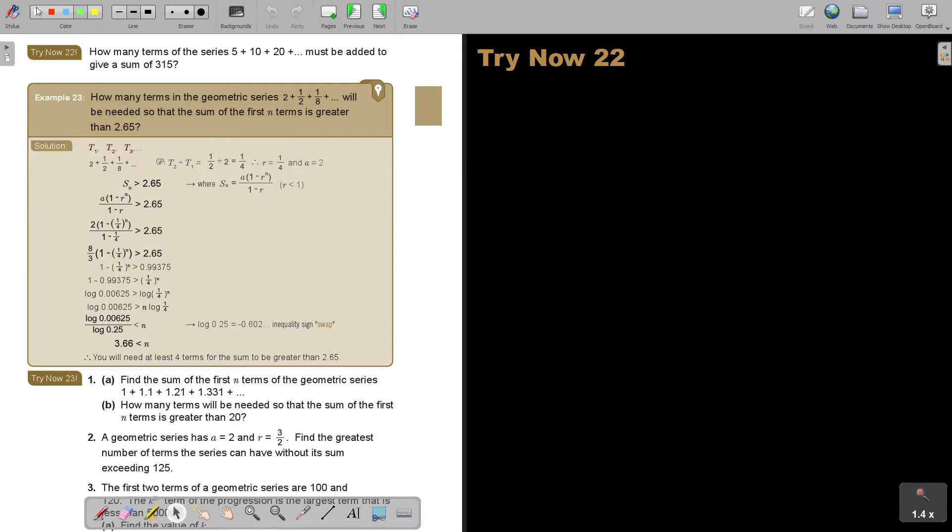Let's start. The sum of the series, and it's 5 plus 10 plus 20 plus 1, 2, 3, must be added to give a sum. So I know the sum is 315.